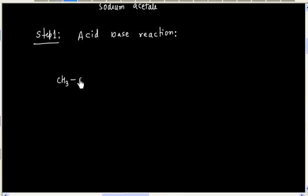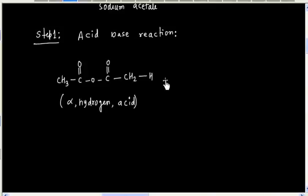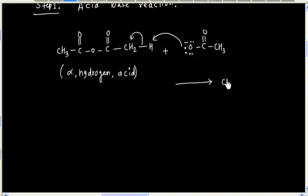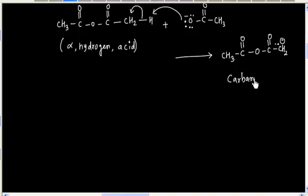Acetic anhydride has an alpha-hydrogen that is acidic, and we will generate a carboanion. This is also called enolate ion.